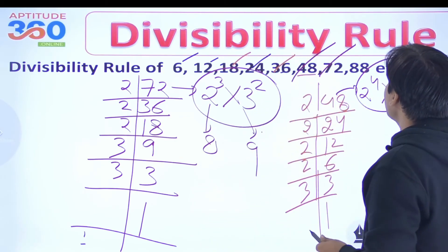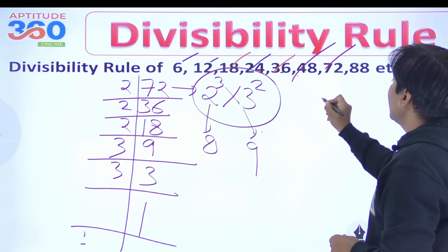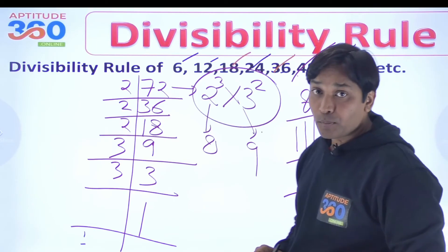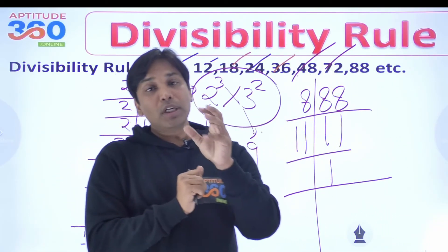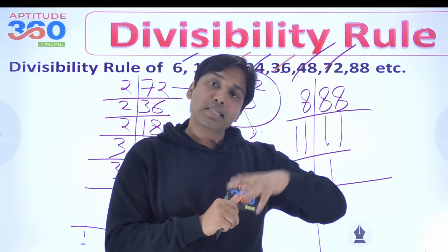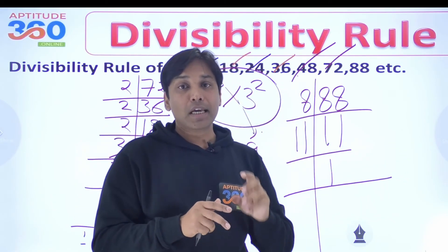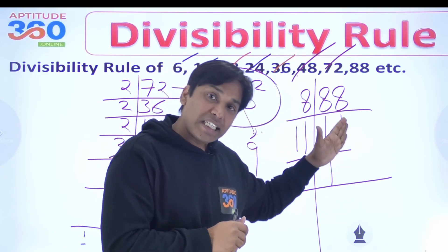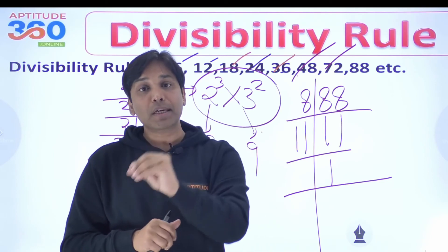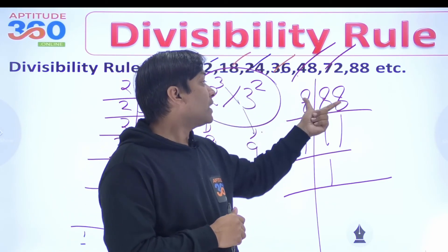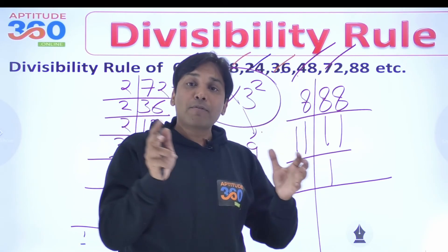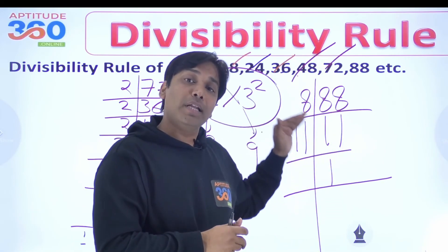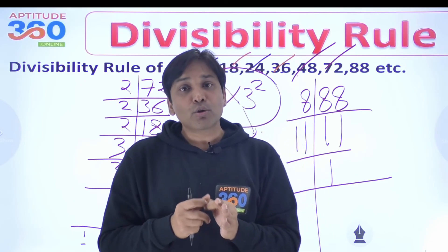Last but not the least, you have got 88. The prime factorization of 88 is 8 times 11. These are 2 co-prime numbers — we will discuss co-prime numbers in some other video. In the case of 12, 3 and 4 are co-prime. In the case of 36, 9 and 4 are co-prime. In the case of 88, 8 and 11 are co-prime. For 88, the rule of 8 says check the last three digits, and you know the rule of 11 — the difference of the sum of digits at even places and odd places. If both conditions are met, that number is a multiple of 88. So that is the divisibility rule of all these composite numbers.